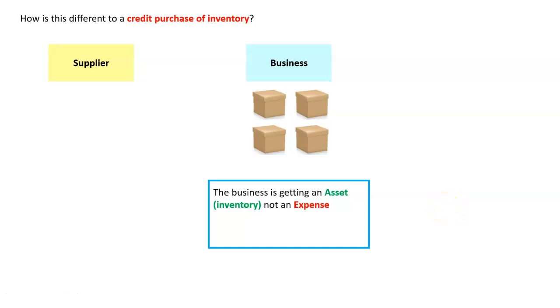So we're dealing with expenses in this topic, not assets. And you can tell this is different because with inventory, we get it and then we sell it to a customer, and then it becomes an expense. But that's not what this topic here is. This is when we actually, on credit, we are buying an expense and not an asset.